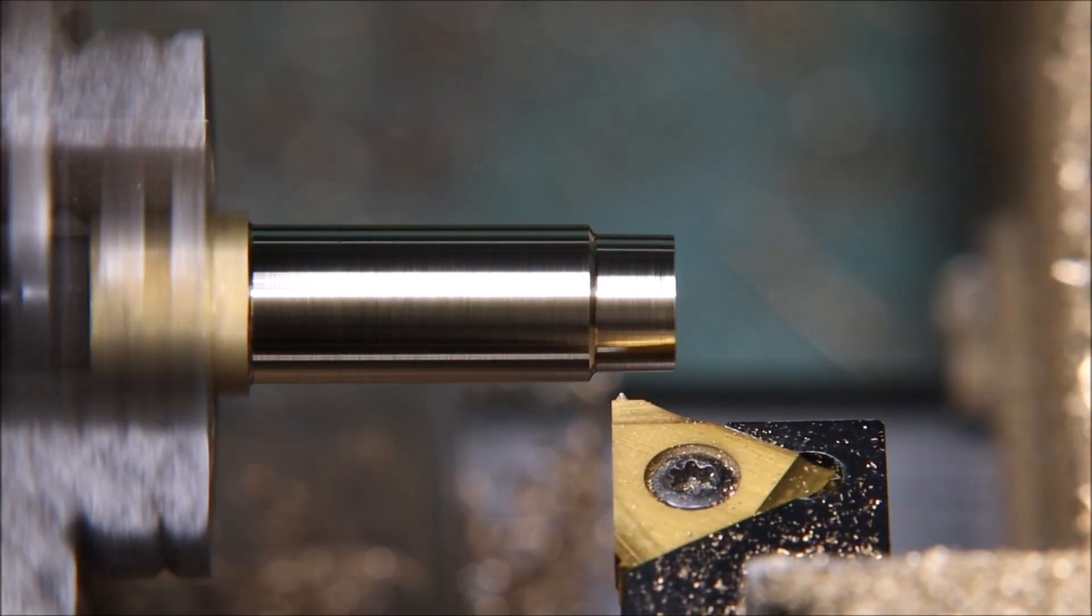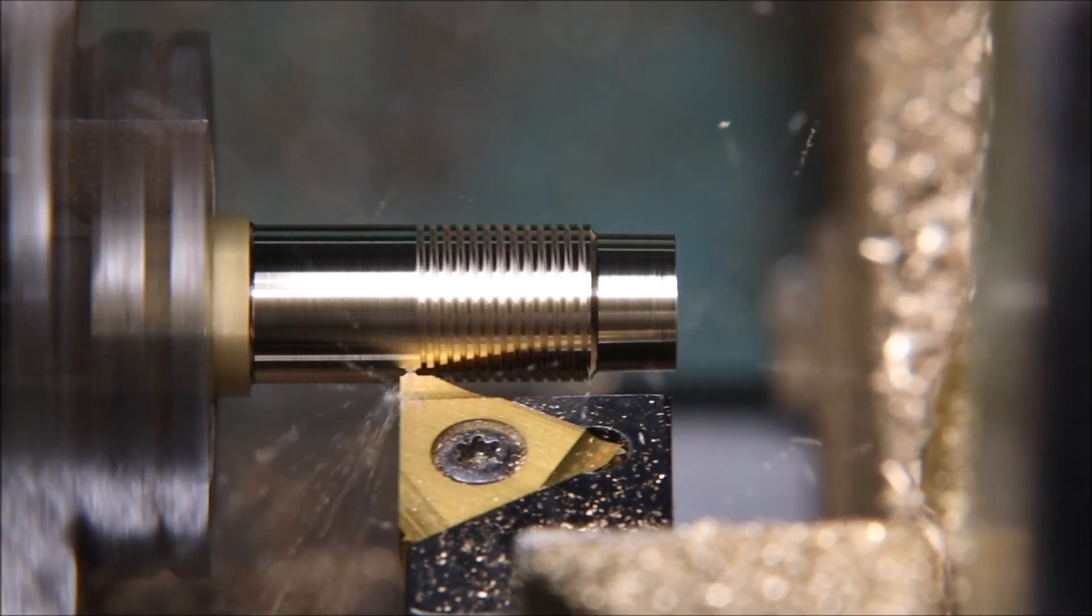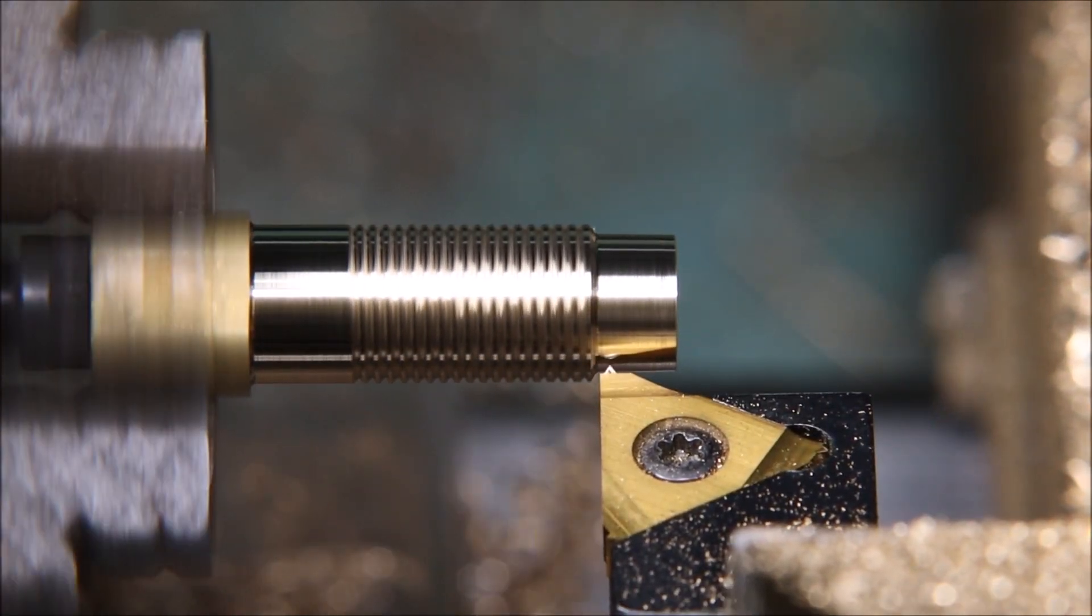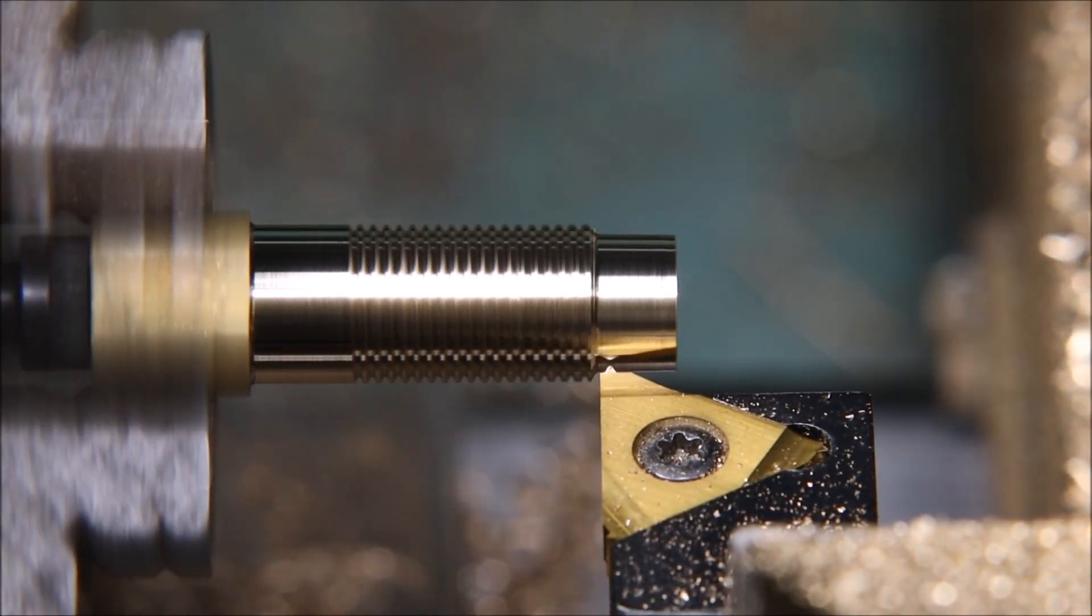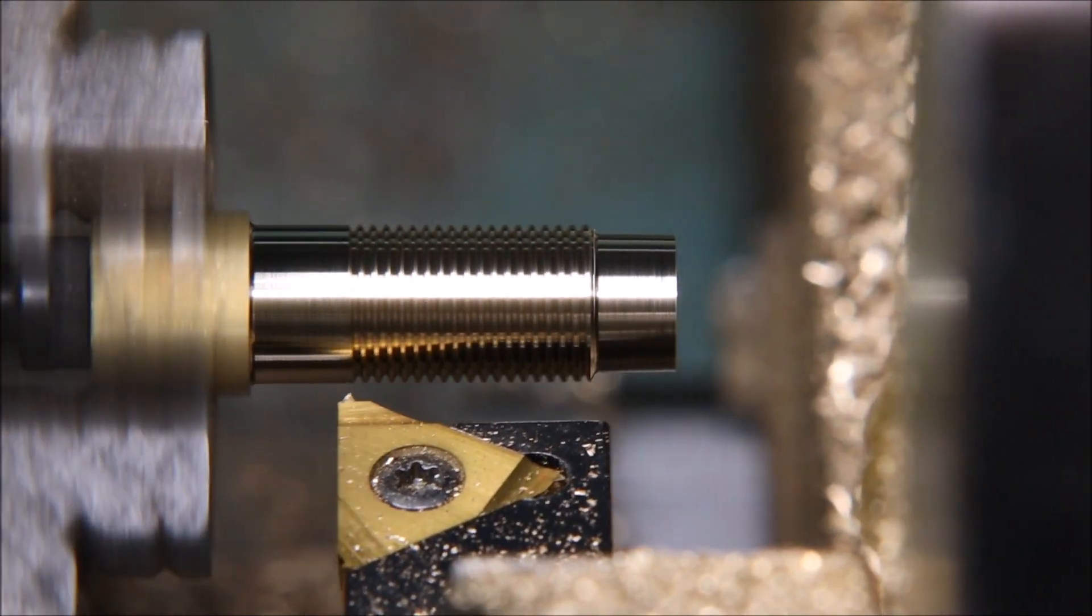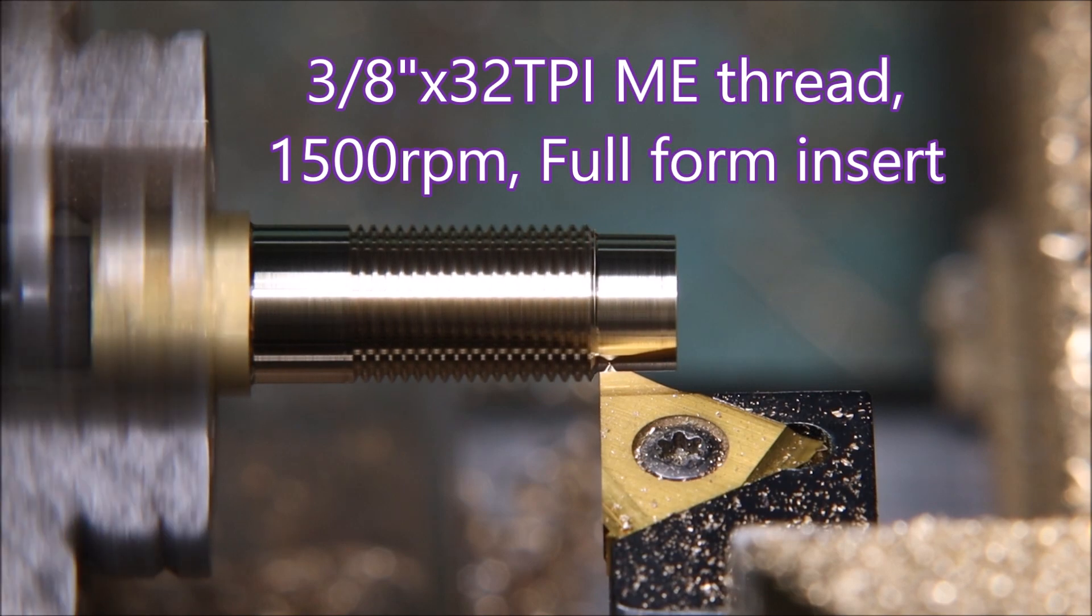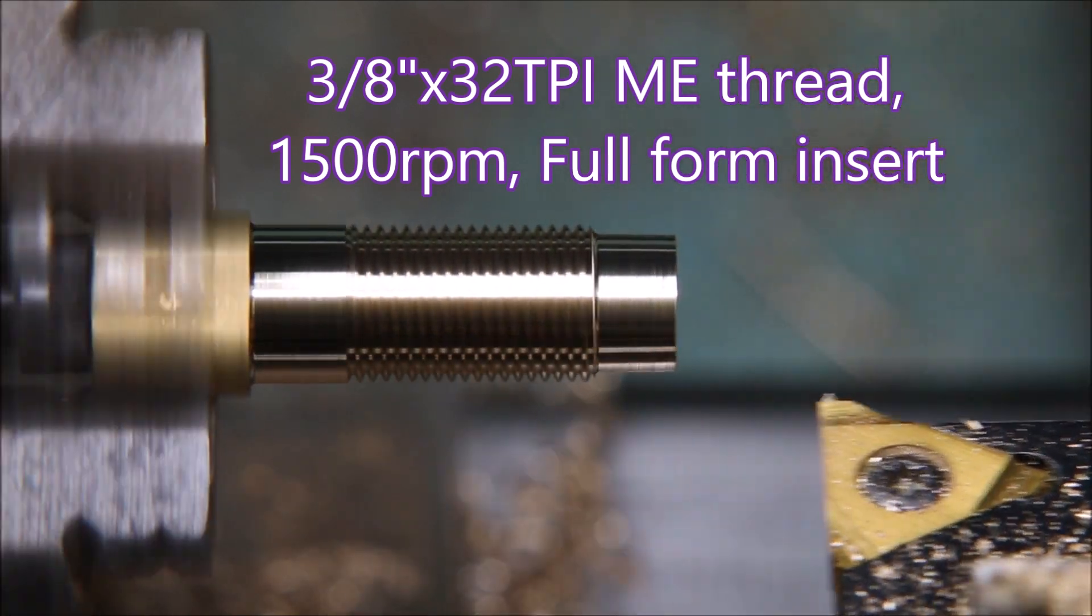I know this is only a very tiny thread but if you have a look at the top of the part you can see it actually taking shape. As usual I'm using a full form insert which means it cuts the crest as well as the root of the thread. And to me that's the best way to know that you're cutting a good thread.